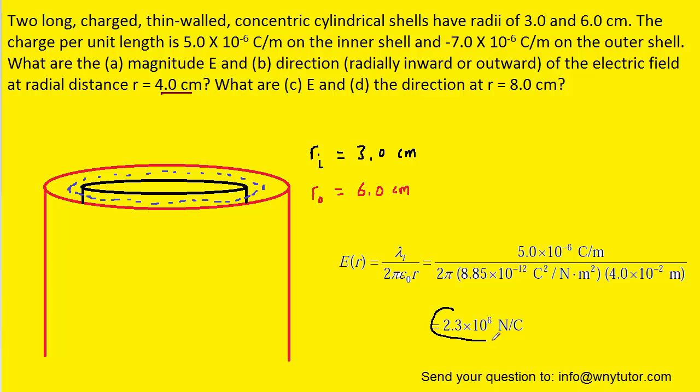The fact that the electric field came out with a positive value indicates that the electric field at the 4 centimeter mark is radially outward. We would have electric field lines that are pointing outward away from the inner cylindrical shell. The correct answer for the direction for part B is outward.